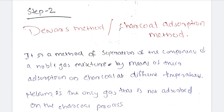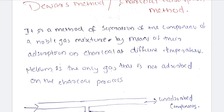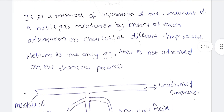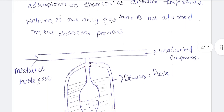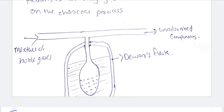The charcoal absorption method is used for the separation of components of a noble gas mixture by means of their absorption on charcoal. Helium is the only gas that is not absorbed on charcoal.